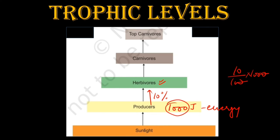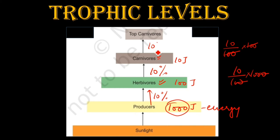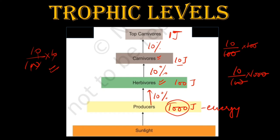10% of 1000 joules is just only 100 joules. Now this carnivore will be getting again only 10%, so 10% of 100 joules is 10 joules. The top carnivores who will be eating these carnivores will again get just only 10% of 10 joules, which is just only 1 joule. So in this way, you come to know that the energy level always keeps on decreasing, whether it be any type of ecosystem — pond ecosystem, marine ecosystem, or whatever — because 90% of energy is lost in the surrounding.